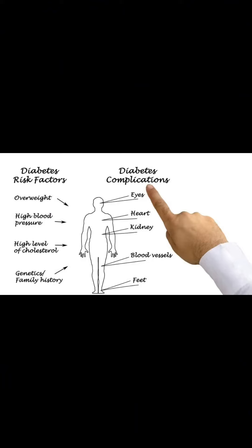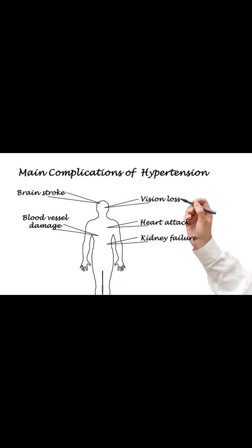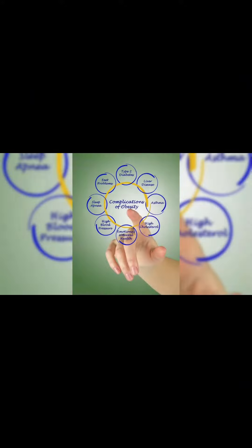Understanding Diabetes Part 2: Complications and Considerations. Hypoglycemia — low blood sugar caused by too much insulin or other factors. Symptoms include dizziness, confusion, and unconsciousness. Treated with fast-acting carbohydrates.